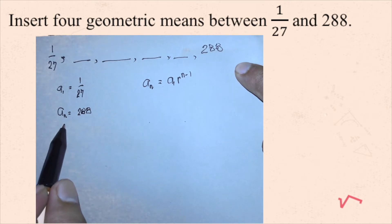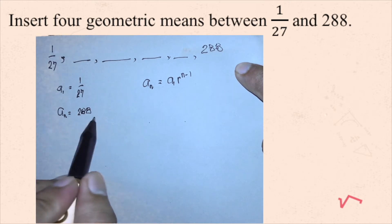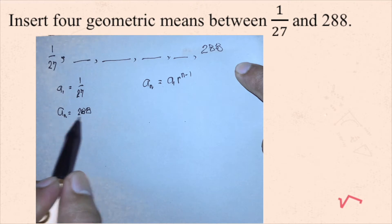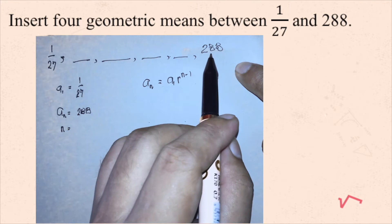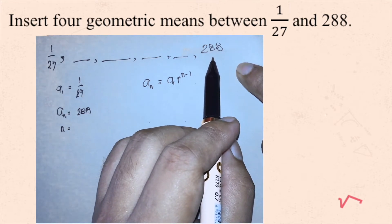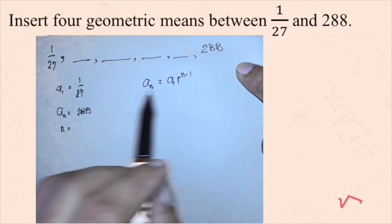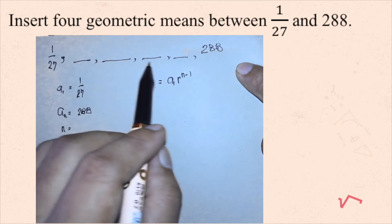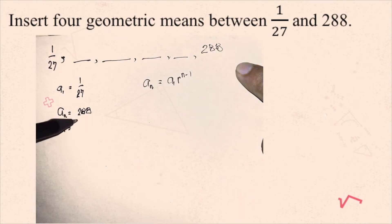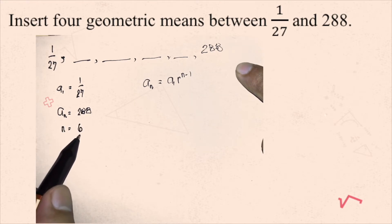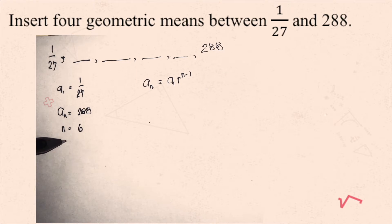Since we're using 288 as a sub n, we assign n depending on the order of the term 288. Counting the positions: 1, 2, 3, 4, 5, 6 — 288 happens to be the sixth term. So n is 6, and we're going to find r.